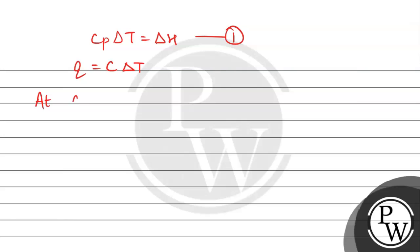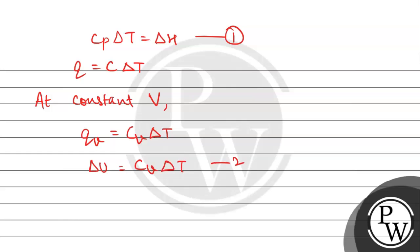Now we will take it at constant volume. For constant volume, Qv = Cv·ΔT, and heat at constant volume equals the change in internal energy, ΔU. So Cv·ΔT = ΔU — this is equation 2.